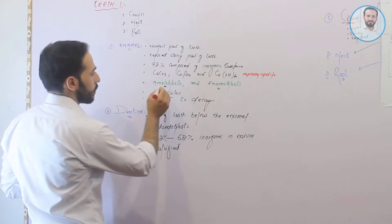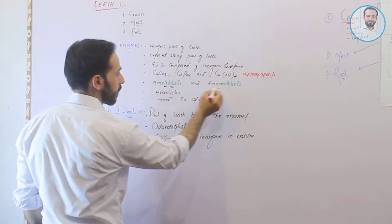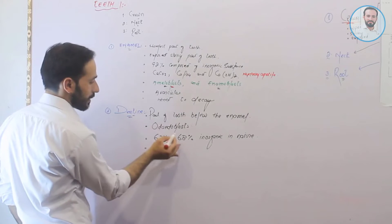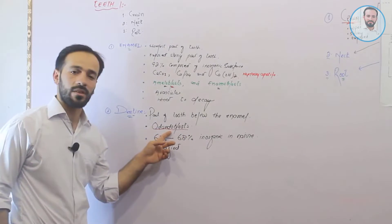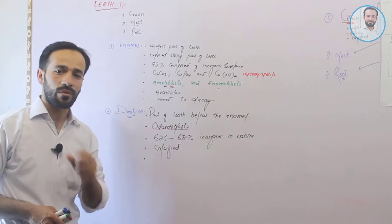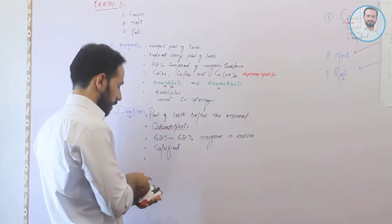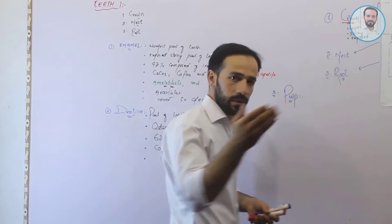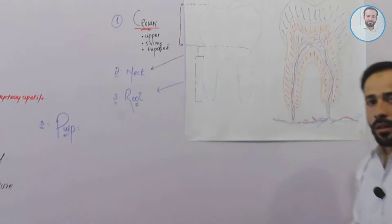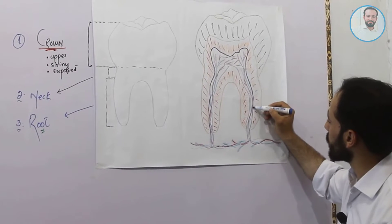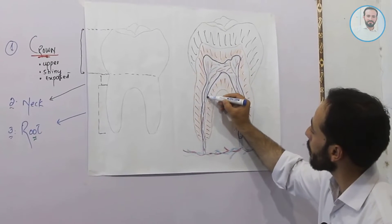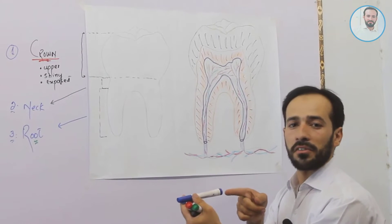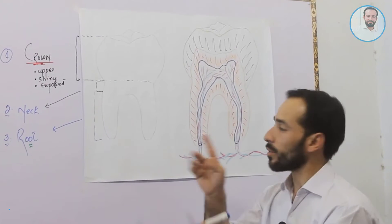The important point: which type of cells are secreting enamel? These are ameloblasts and enameloblasts. Which type of cells are secreting the dentine mass of the tooth? Those cells are called odontoblasts. The next — third — part of the tooth is called pulp. This connective tissue mass present here is the third part of the tooth, called the pulp.